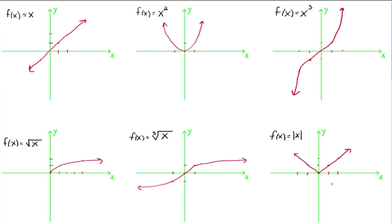The domain for the absolute value function is all real numbers, and the range is from 0 to infinity. It's a good idea to have these six graphs ingrained in your brain. Whenever we see f of x equals x squared, picture a basic parabola. Whenever we have the square root of x, picture that basic square root graph. All the other graphs we'll work with are just these functions shifted right, left, up, down, flipped, stretched, or shrunk. If we know these graphs, it helps with more complicated functions later. Study well, and please let me know if you have any questions.